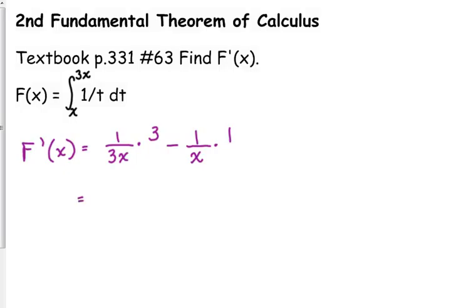So, let's see here. When we simplify, we have 1 over x minus 1 over x, and that is 0.